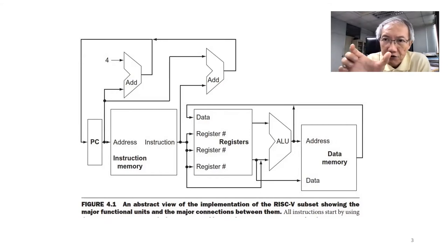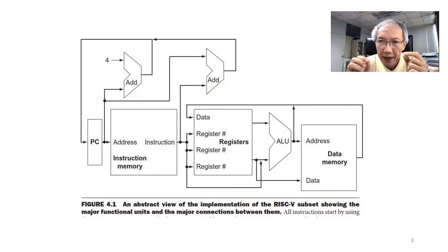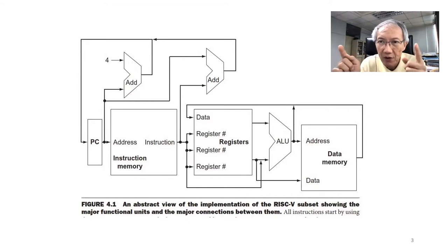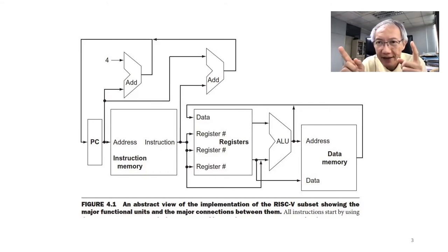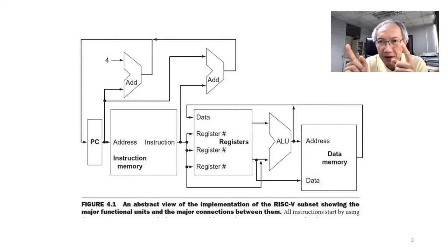The instruction is 32-bit for RISC-V and the data is 64-bit. This processor addresses the memory using bytes. One word is 32-bit, so there are 4 bytes in one word. For the data, one data item is 64-bit — a double word. Double word is 64 bits, word is 32, and byte is 8 bits.